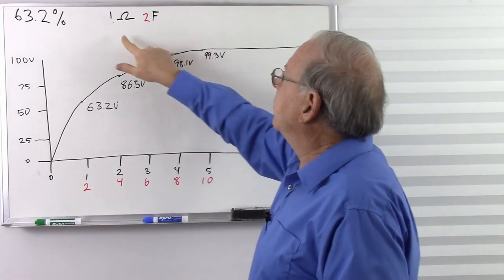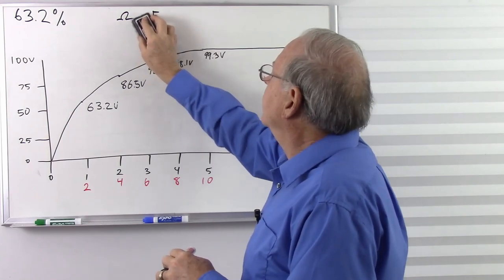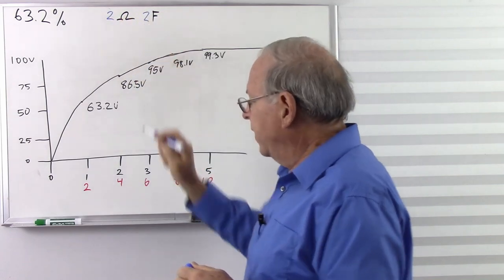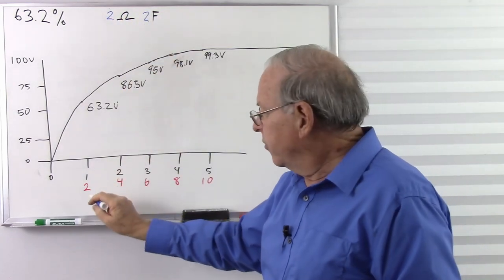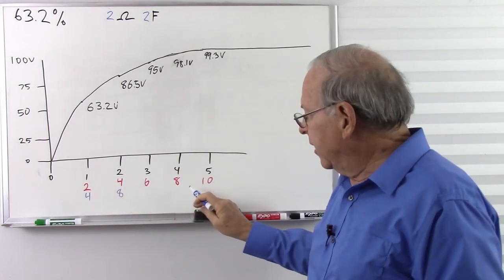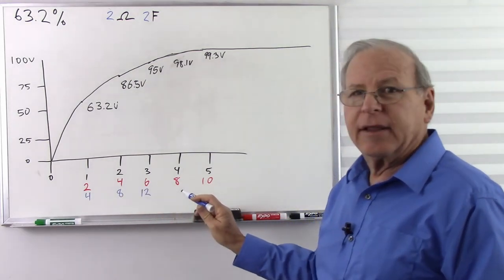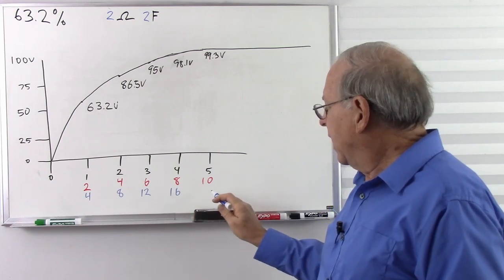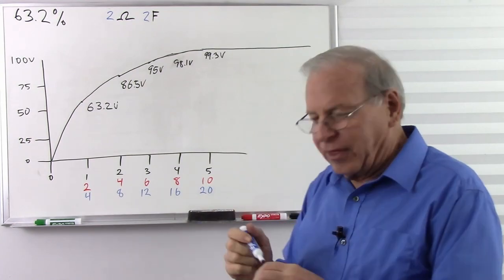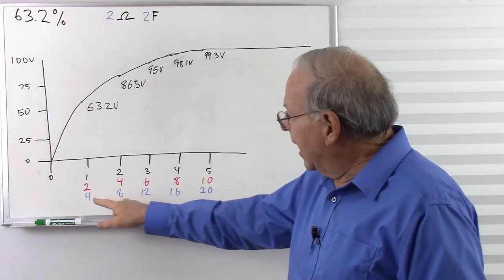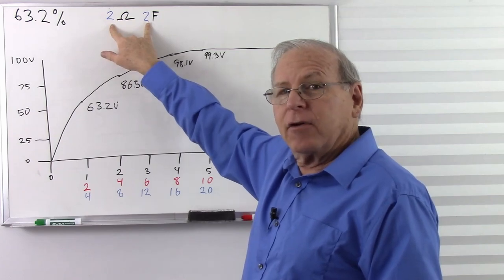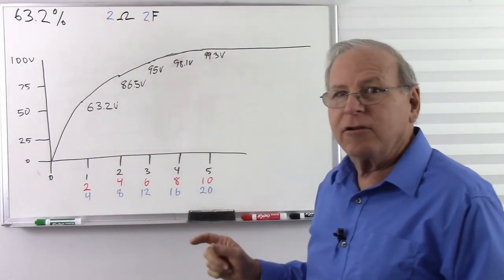Now let's see what happens if we double both — 2 ohms and 2 farads. Now it takes 4 seconds to reach the first milestone, 8 seconds to the next, 12, 16, and 20 seconds. It takes four times as long to reach each milestone. So there's a formula here that tells us how long it will take.